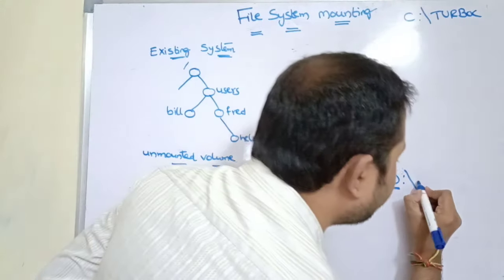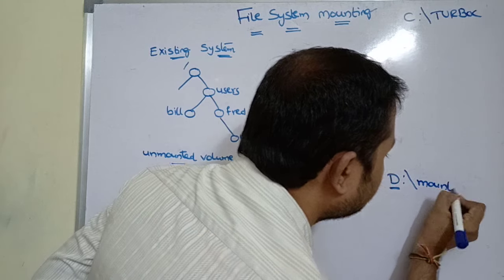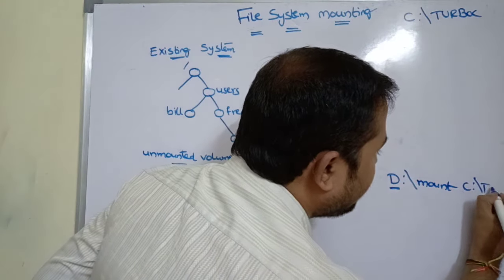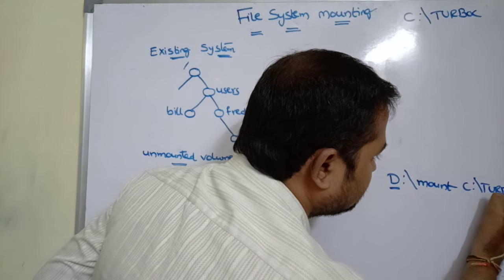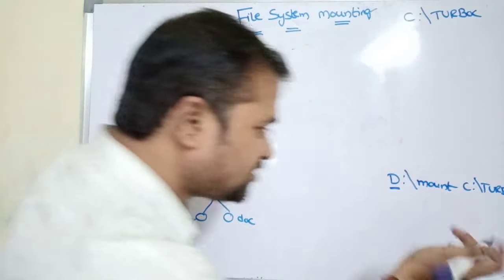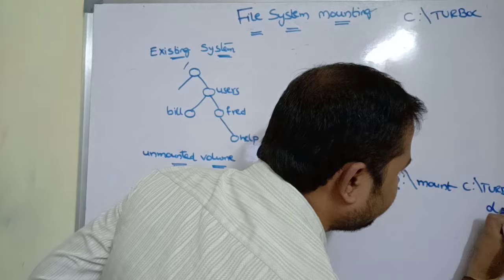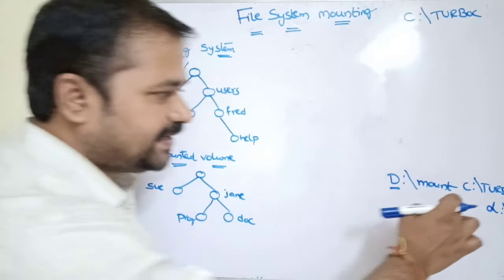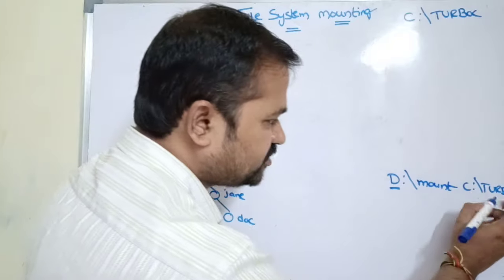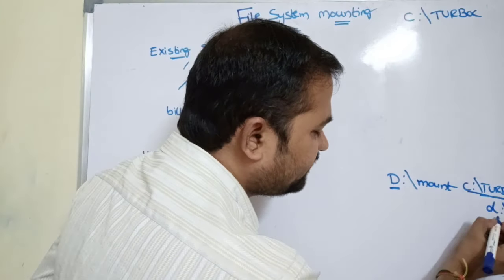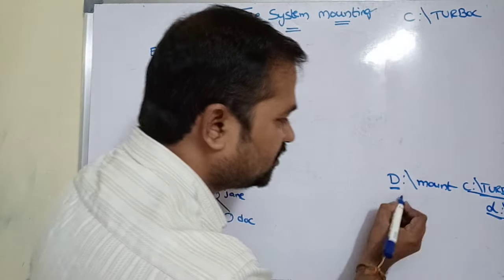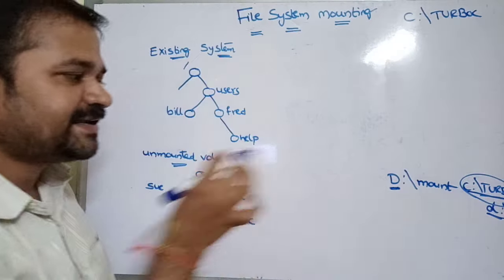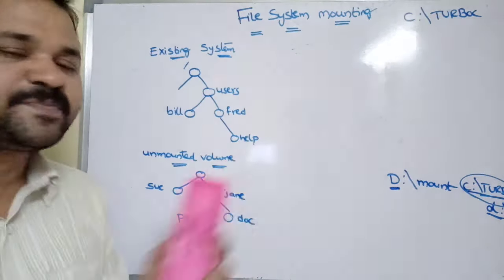To perform mounting, we use the command: mount space C colon slash TurboC. So what is the path we need to attach it to? D colon slash. Once the statement is executed, the C colon slash TurboC folder will be available at D, and in D we can make use of the Turbo C directory files.